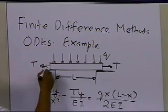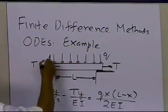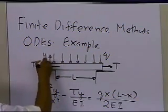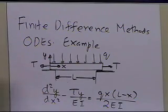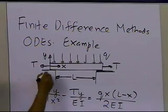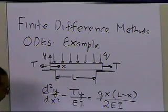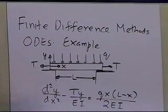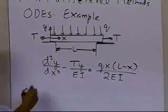And y is the deflection — so y is the deflection measured like this — and x is the location at a particular point along the beam. Let me go ahead and put some values of these variables in there.